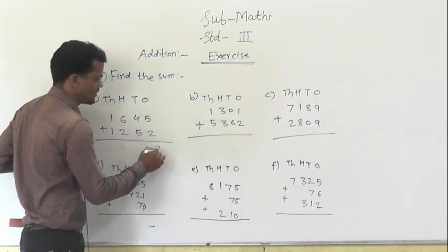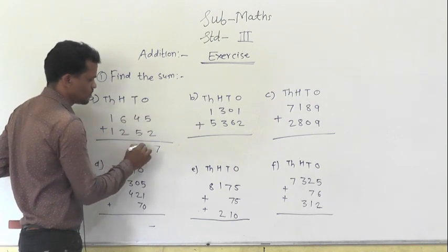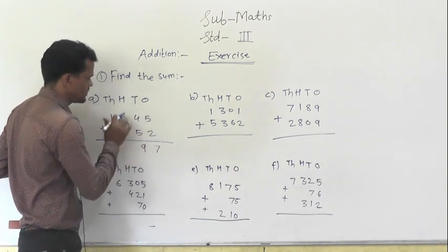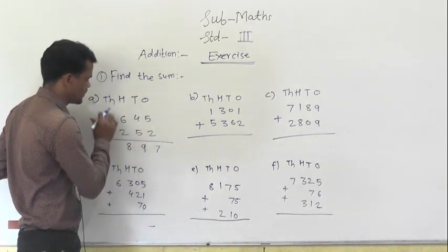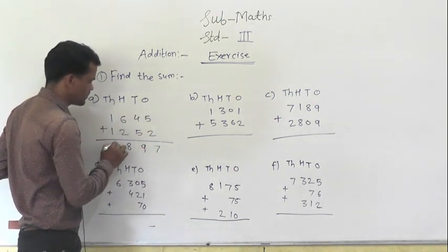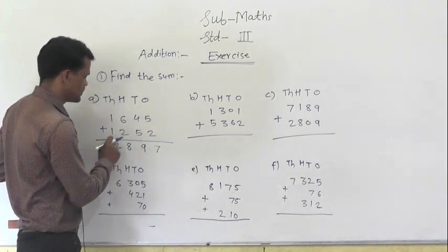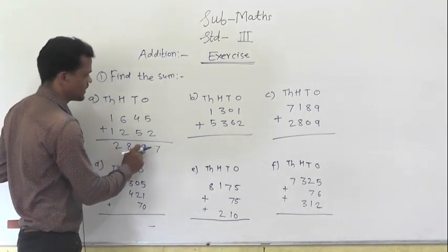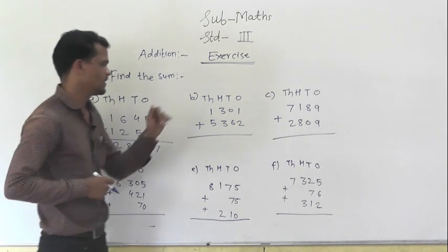5 plus 2 is 7, 4 plus 5 is 9, 6 plus 2 is 8, 1 plus 1 is 2. The answer is 2897.